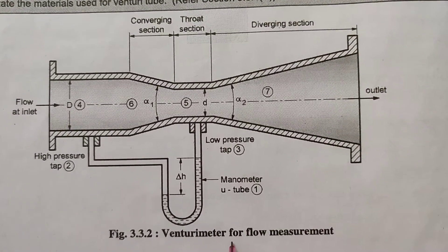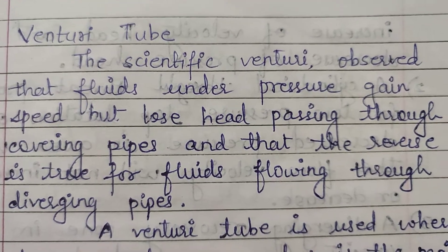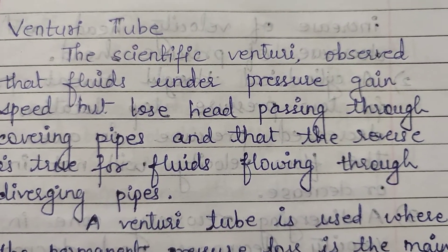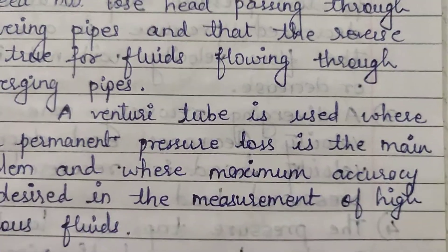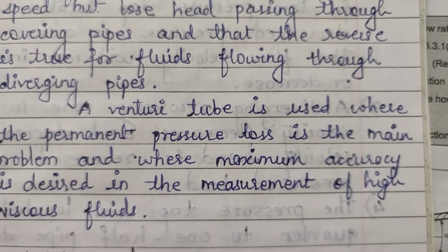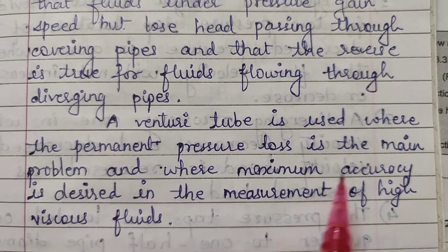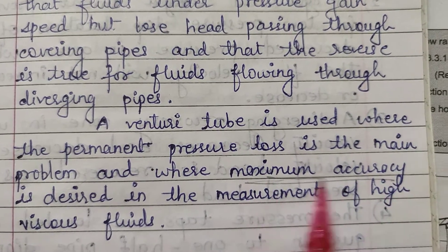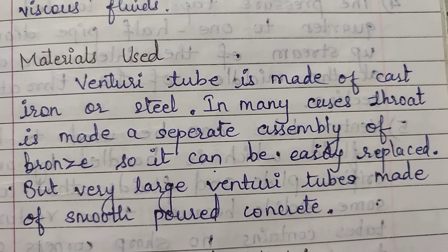First, we will see the Venturi flow meter. This is our diagram of the Venturi flow meter. The scientist Venturi observed that a fluid under pressure gains speed but loses head passing through converging pipes, and that the reverse is true for fluids flowing through diverging pipes. A Venturi tube is used where permanent pressure loss is the main problem and where maximum accuracy is desired in the measurement of high viscous fluids.